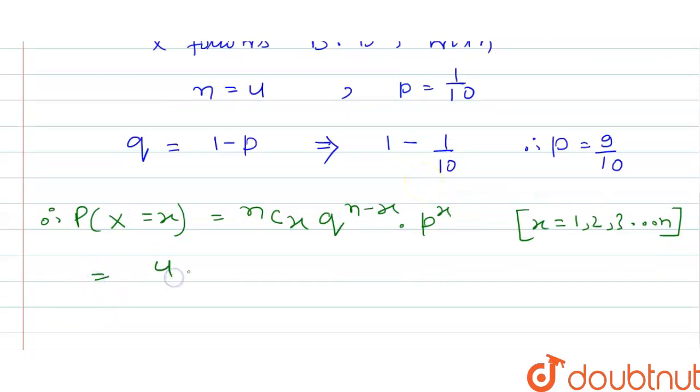Now 4Cx when n equal to 4, then 4Cx times 9 by 10 is the value of Q, so there will be Q equal to 9 by 10. Then the value of P will be 1 by 10 to the power x.